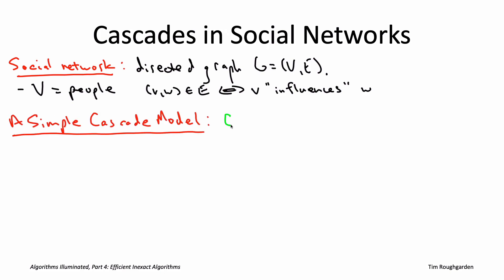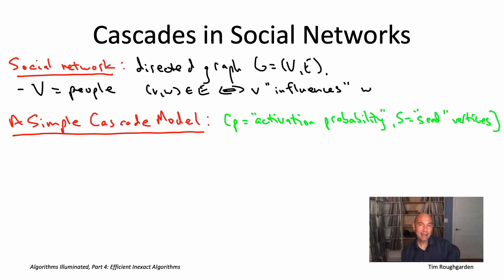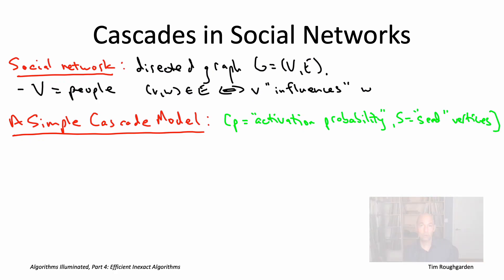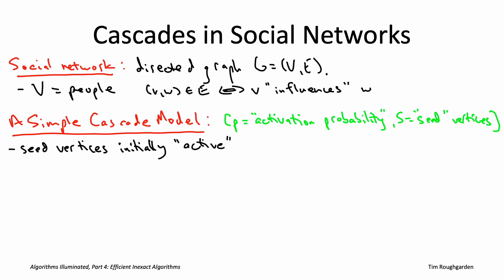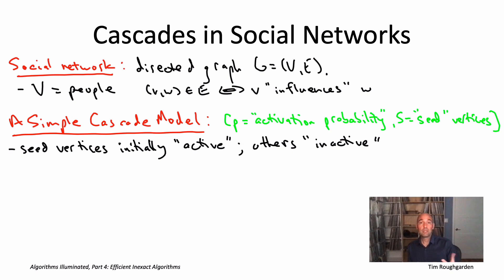Let's just look at a very simple one. It's parameterized by what's called an activation probability P, a real number between 0 and 1, and also a subset of the vertices which we're going to call seed vertices. In this cascade model, every vertex is going to have a status that will either be active or inactive. You can think of active as a person who actually clicked on a link to a news article, and inactive as someone who has not. Initially, the seed vertices are all going to be active — these are the people who initially read a news article without any prompting. All other vertices are initially inactive. Vertices will never go from active to inactive, but vertices can go from inactive to active — maybe a person eventually does click on a link to a certain news article.